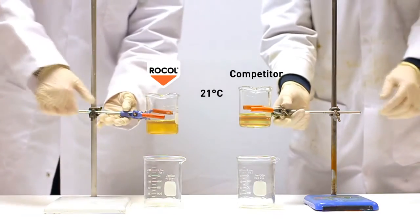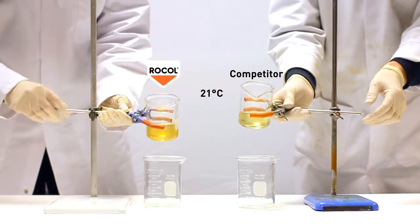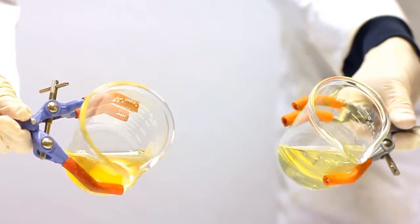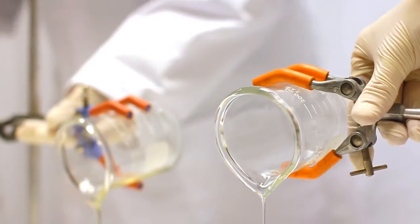What is the pour point of a lubricant and why does it matter? The pour point is the lowest temperature that a lubricant can be brought to before it stops flowing. Below the pour point, a lubricant loses its liquid properties and becomes solid or semi-solid.